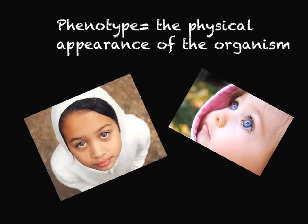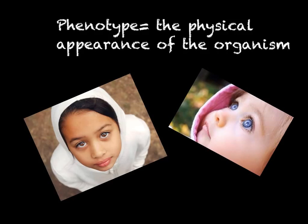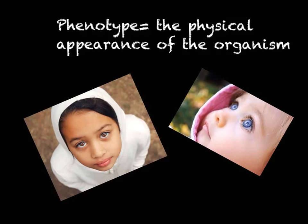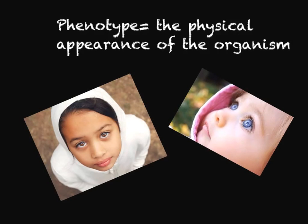The phenotype is the physical appearance of the organism. So when you are charting for their traits, it's what they look like. In these two pictures, we are going to be comparing eye color — brown eyes to blue eyes. So the actual look is the physical appearance. The letters, on the other hand, are their genotypes.